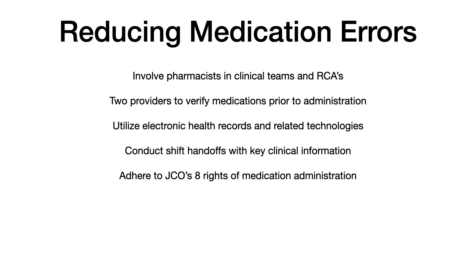One way to reduce medication errors is to involve pharmacists — this point shows up on USMLE and Comlex a lot. A lot of questions will describe a medical error and ask the best way to proceed, and often the answer involves allowing the pharmacist to give their input or speak in a root cause analysis meeting. Other strategies include having two providers verify medications prior to administration, using electronic health records rather than paper charts, conducting proper shift handoffs, and adhering to the Joint Commission's eight rights of medication administration. Big takeaway: involve pharmacists.